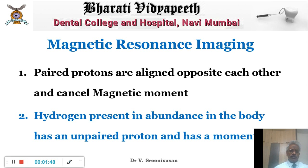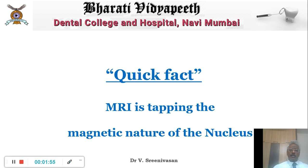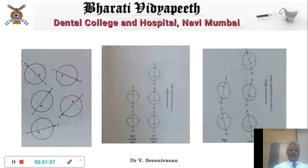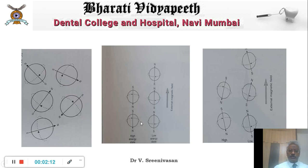Why only potential? Why is there not routinely a magnetic moment experienced by all of us? The reason is that these magnets are randomly arranged. It is only when we put them in a very strong magnetic field that they get aligned with the field — either exactly aligned or in exactly the opposite direction.